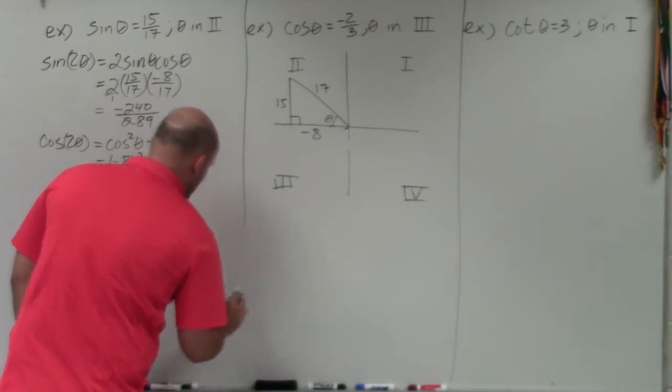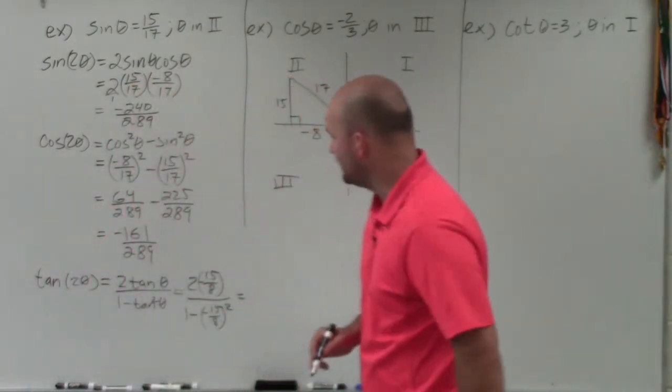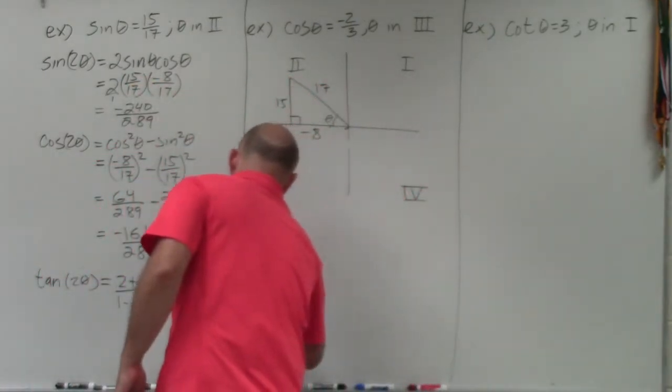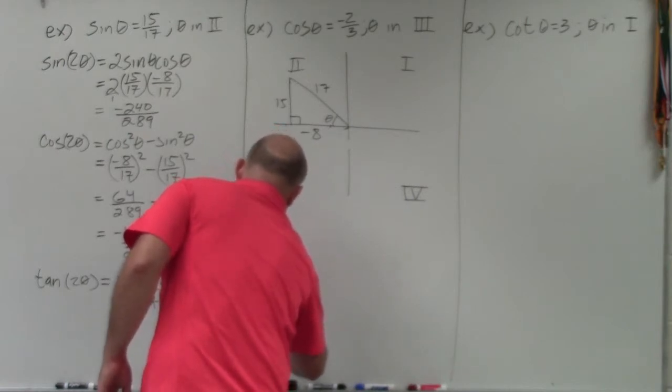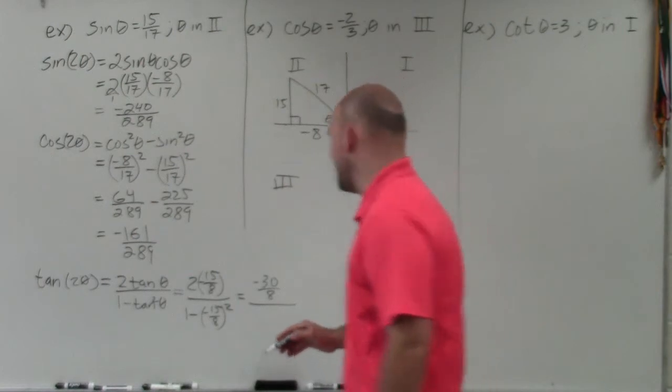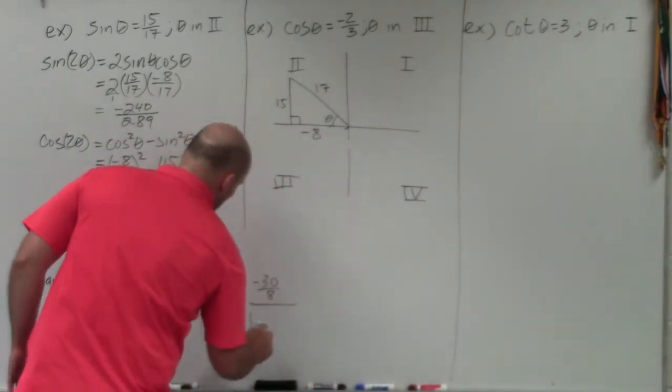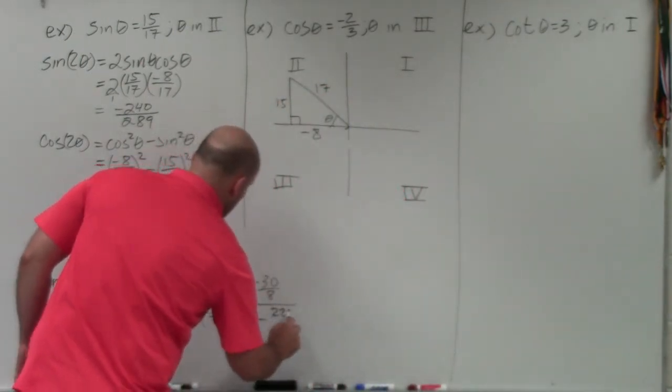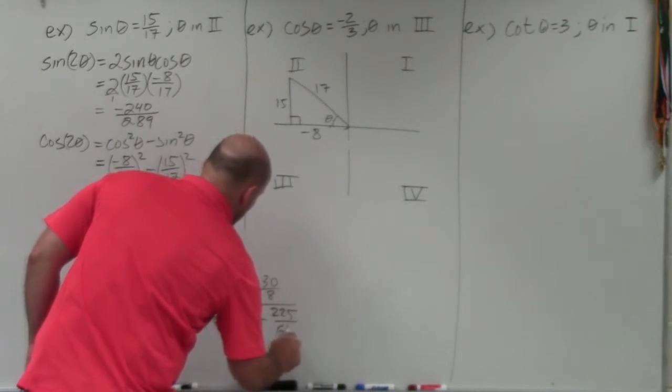So as I keep on working with that, I can multiply across here, which is going to give me a negative 30 over 8 divided by, I can square that, so it's going to be 1 minus 225 divided by 64.